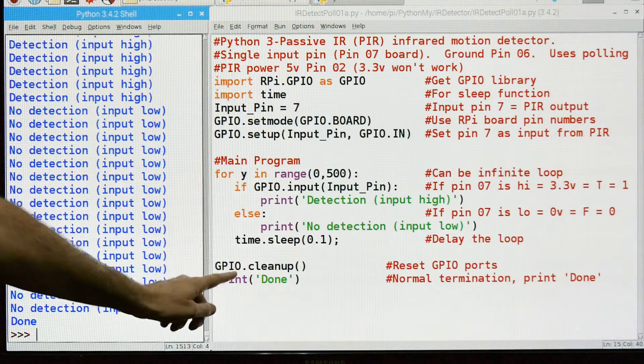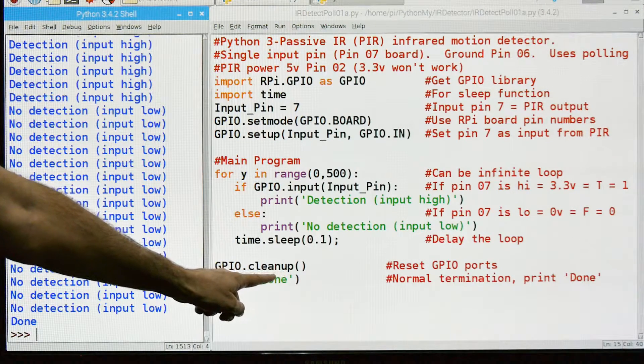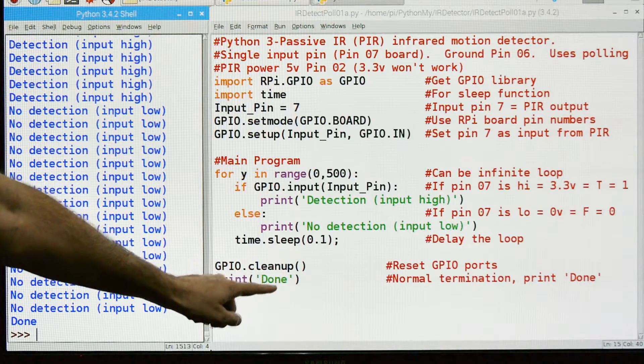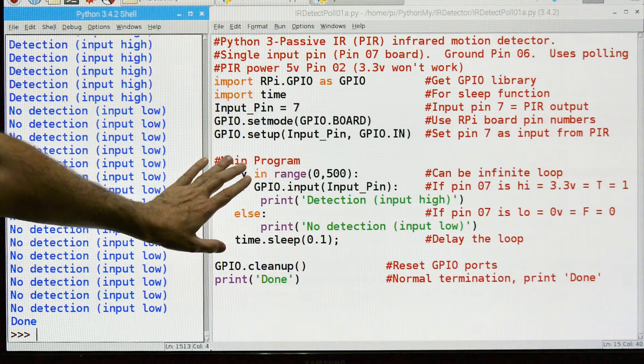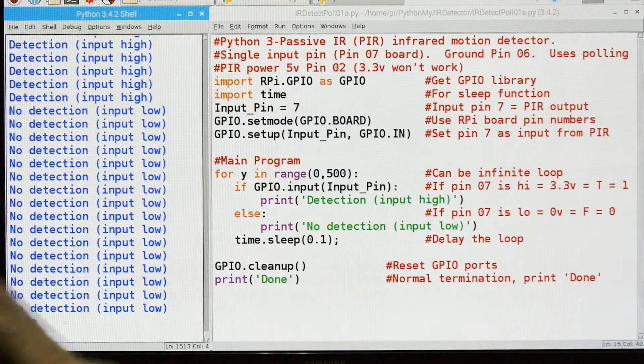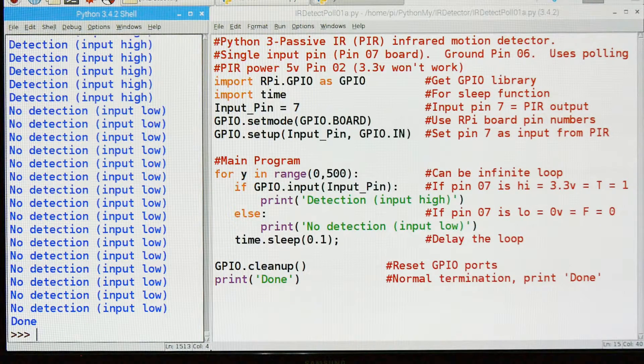And when that's all done, we're going to fall through. And we're going to do the cleanup. We're going to put the GPIO pins back where they were. And then we're going to print done. So we know that it concluded normally. But again, if you do an infinite loop, you won't need that.